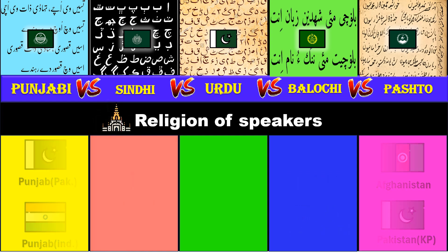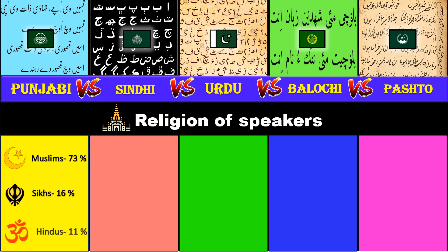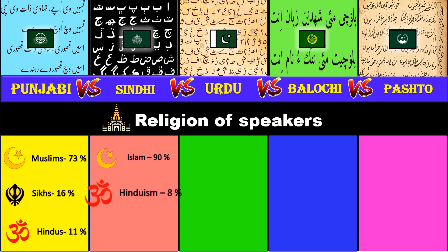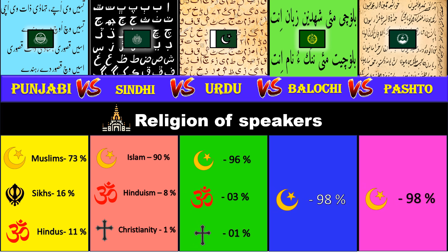Religion of speakers. Punjabi speakers are 73 percent Muslim, 16 percent Sikh and 11 percent Hindu. Sindhi speakers are 90 percent Muslim, 8 percent Hindu and 1 percent Christian. For Urdu it's 96 percent Muslim, 3 percent Hindu and 1 percent Christian. For Balochi and Pashto it's 98 percent Muslim.